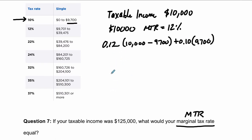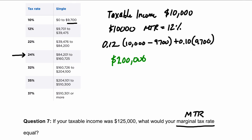Now, in this problem, we're just considering marginal tax rates. For example, if your taxable income was $200,000, what would your marginal tax rate be? Look at your table and find where $200,000 falls — it's right here, so it's a 32% marginal tax rate. In our case, we have $125,000, and that's in this bracket right here, which brings us to a 24%, or 0.24, marginal tax rate. All right, hope that helped.